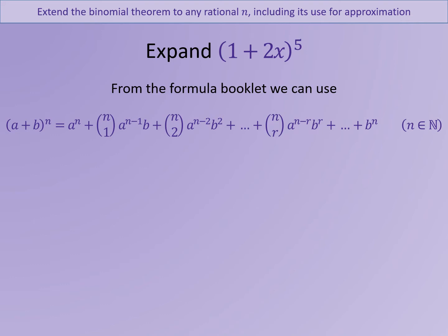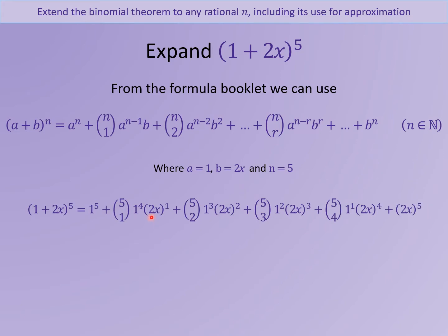So a plus b to the power n expands to a to the power n and so on, remembering that these parts just here you can potentially use your calculator, and your n is in this case to the power five. The a value is just one in this case, and your b value is the same as 2x. It's important to make sure you put the full 2x into the formula. Simple mistakes can be made if you put 2x in because you may forget the 2 is also getting squared.